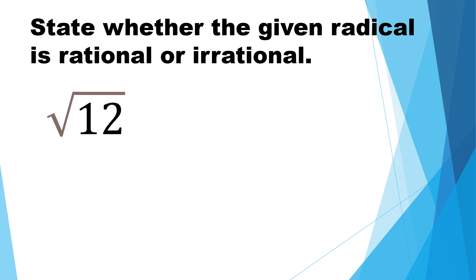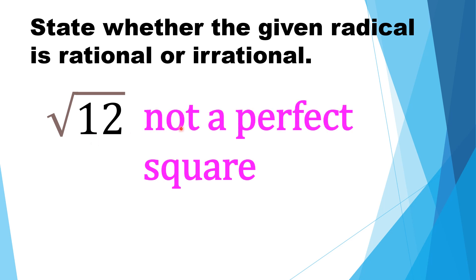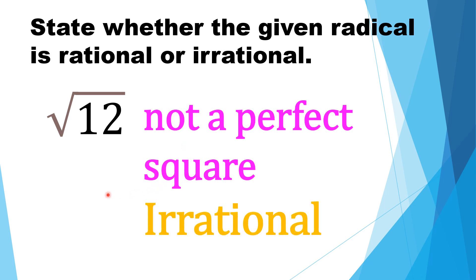Square root of 12. Let us determine if the radicand 12 is a perfect square or not. 12 is not a perfect square. If the radicand is not a perfect square, the radical is irrational. So, square root of 12 is irrational.